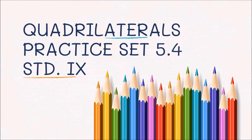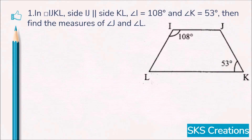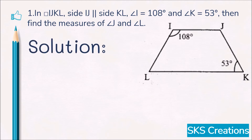In this video we will learn a new chapter on quadrilaterals, Practice Set 5.4. Question number one: In quadrilateral IJKL, side IJ is parallel to side KL, angle I equals 108 degrees, angle K equals 53 degrees. Find the measure of angle J and angle L. Let's see the solution. In this figure, side IJ and side LK are parallel to each other.